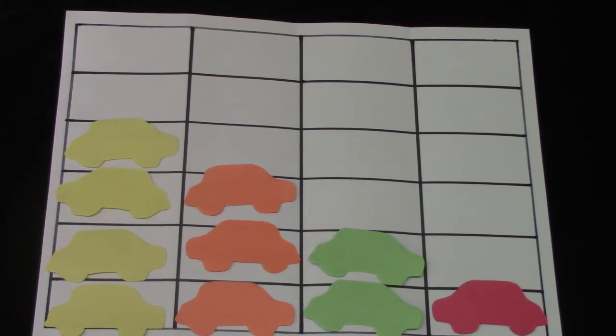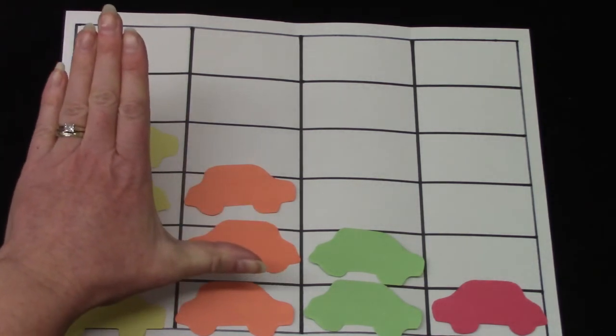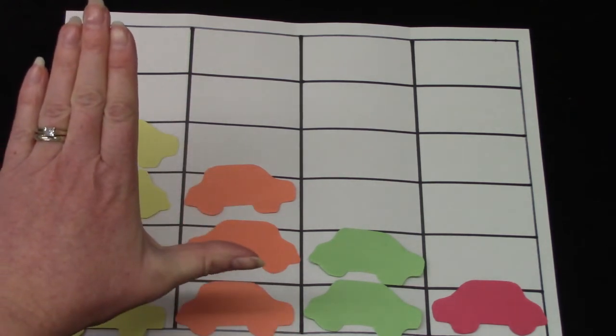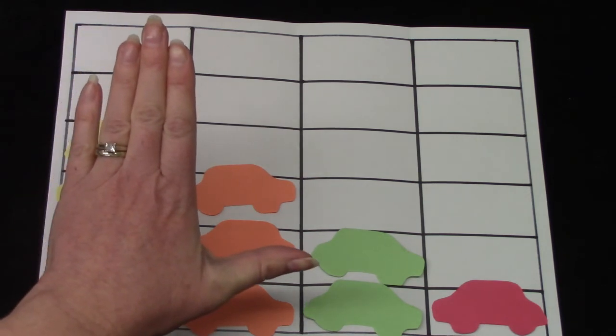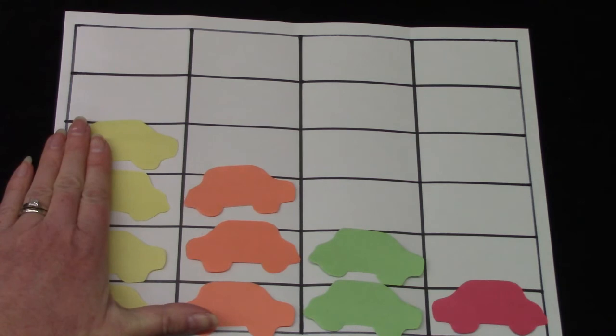They tell us directions. I remember which one is left because when I make my hand on this side, it makes an L, an L for left. This is my left hand, and so this is the left side of the graph.